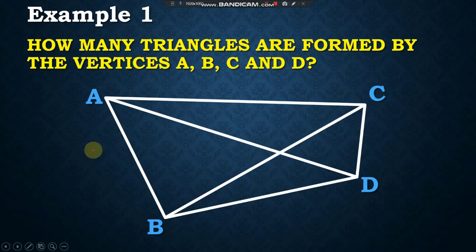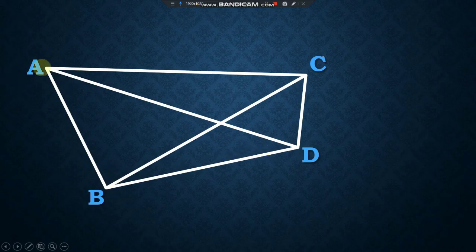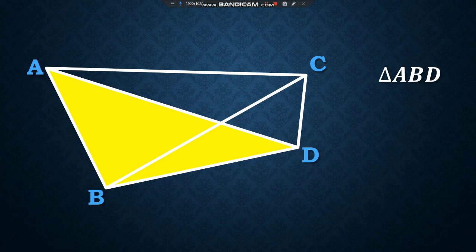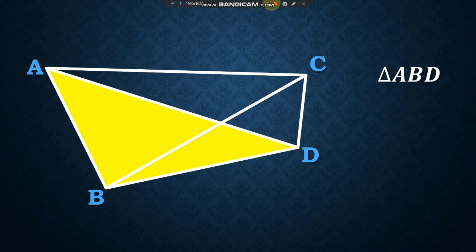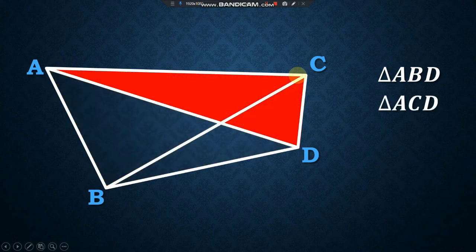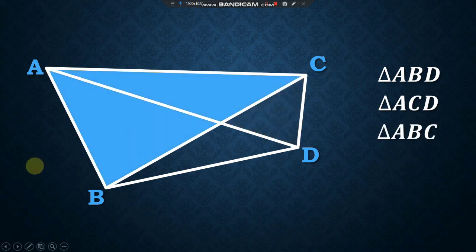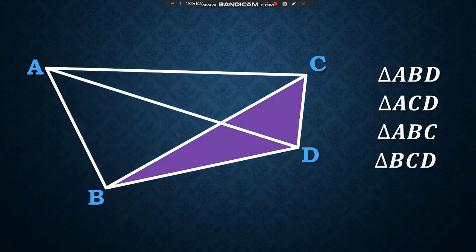We have triangle ABD, which can also be named as triangle BAD or triangle DAB. We can rearrange these letters in whatever way we want to name the triangle, for as long as we use only the letters A, B, and D. So let's stick with triangle ABD. We also have triangle ACD, which can also be named in many other ways like triangle ABC or triangle BCD, but let's use triangle ACD.